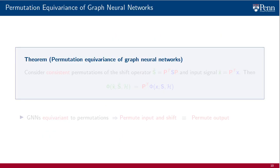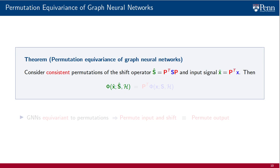The relationship between these outputs is stated by the permutation equivariance theorem of graph neural networks. Consider graph signal x supported on shift operator s, and its permuted version x-hat supported on shift operator s-hat. It then holds that the output of the GNN phi that uses filter tensor h and runs on the permuted signal x-hat and permuted shift operator s-hat, is the corresponding permutation of the output of the GNN phi that uses the same filter tensor h and runs on the original non-permuted signal x and the original non-permuted shift operator s.